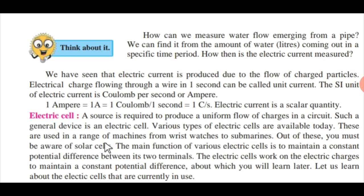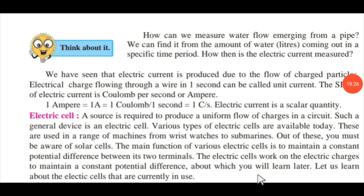You must be aware of solar cells. We use cells in wristwatches, in game controllers, in remotes, and in many different types of devices. The main function of various electric cells is to maintain a constant potential difference between its two terminals. The electric cells work on the electric charges to maintain a constant potential difference, about which you will learn later.